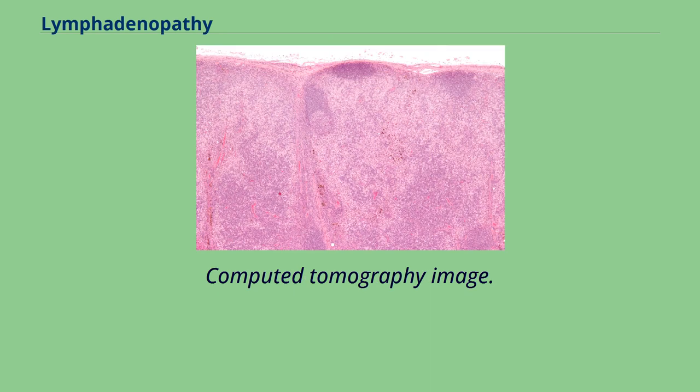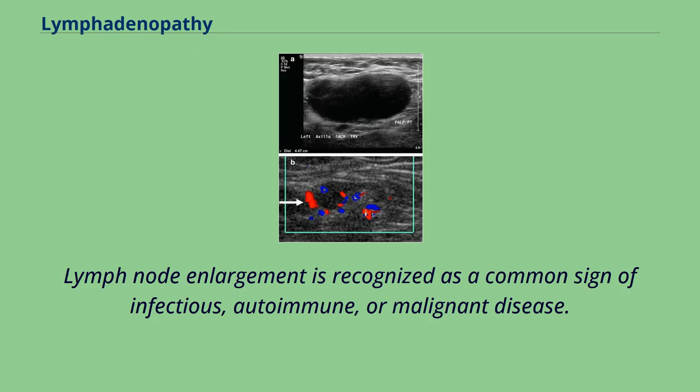Retroperitoneal lymphadenopathies of testicular seminoma embrace the aorta, as seen on computed tomography imaging. Lymph node enlargement is recognized as a common sign of infectious, autoimmune, or malignant disease.